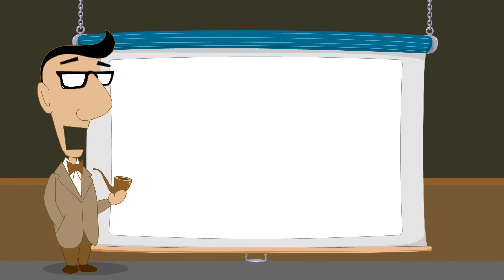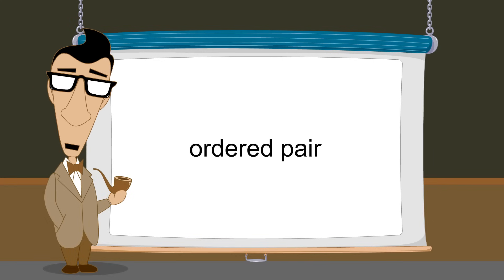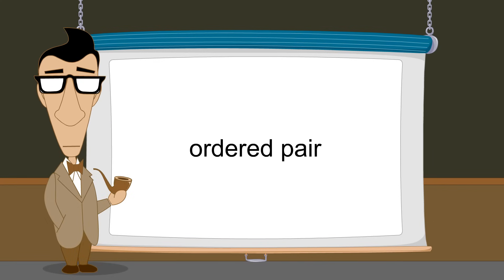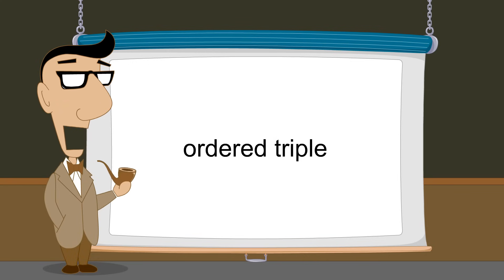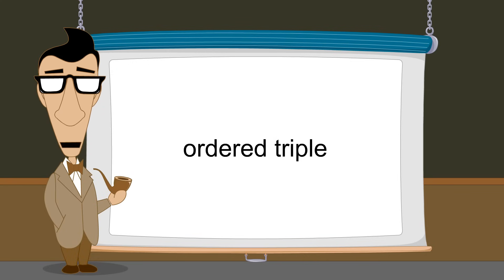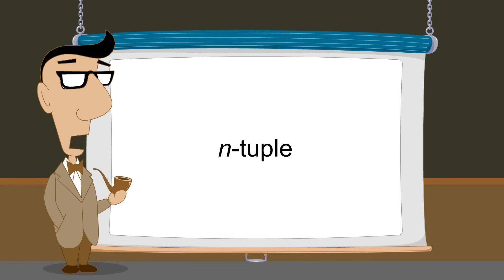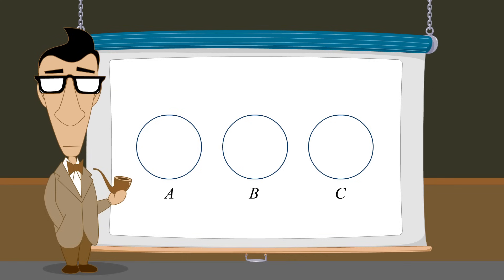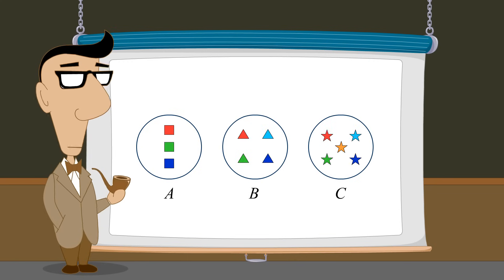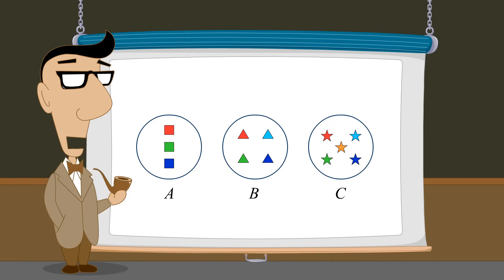We have seen that we can form the Cartesian product of two sets to create elements called ordered pairs, and we can form the Cartesian product of three sets to create elements called ordered triples. In fact, Cartesian products can be created from any number of sets. In general, the elements of a Cartesian product formed from n sets are referred to as n-tuples. Not only can Cartesian products be formed from any number of sets, but each operand set can contain any number of elements. The number of elements in the Cartesian product is equal to the number of elements in each operand set multiplied together.